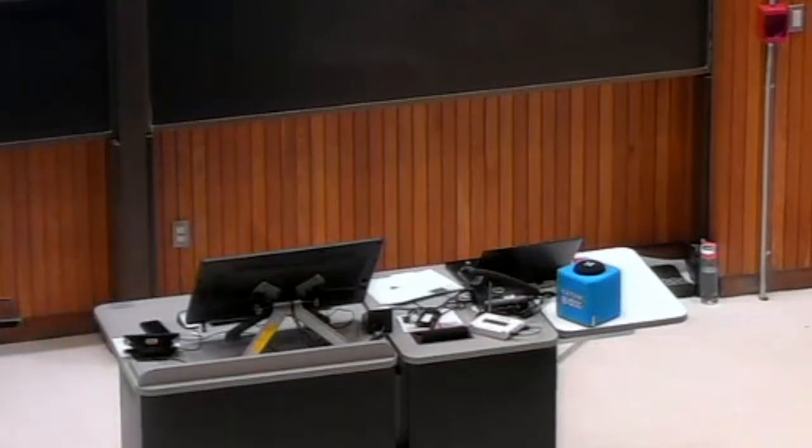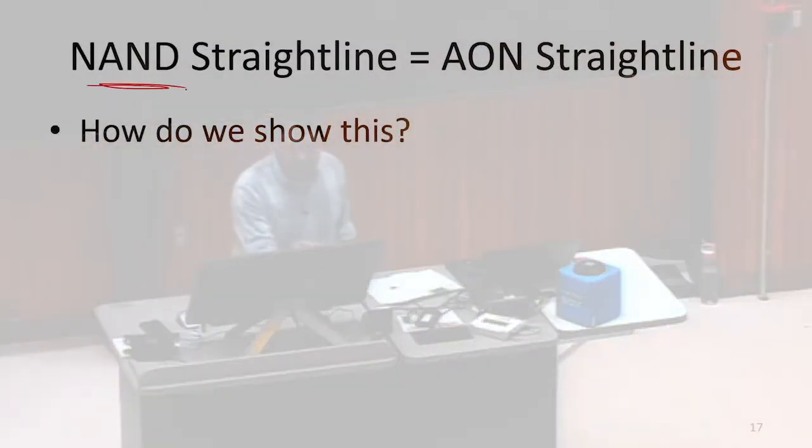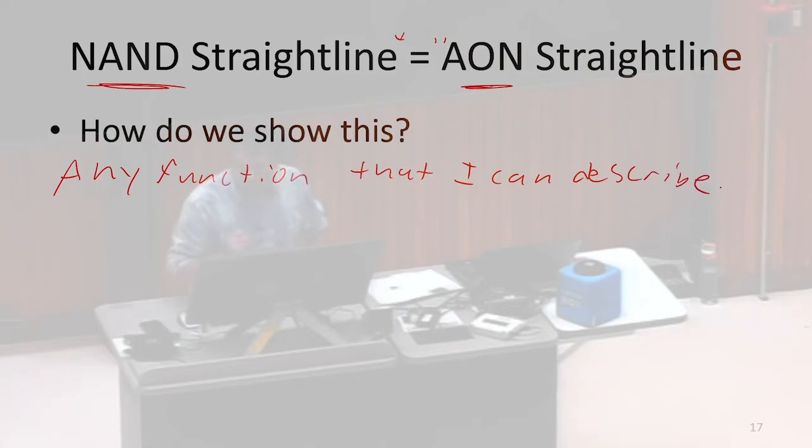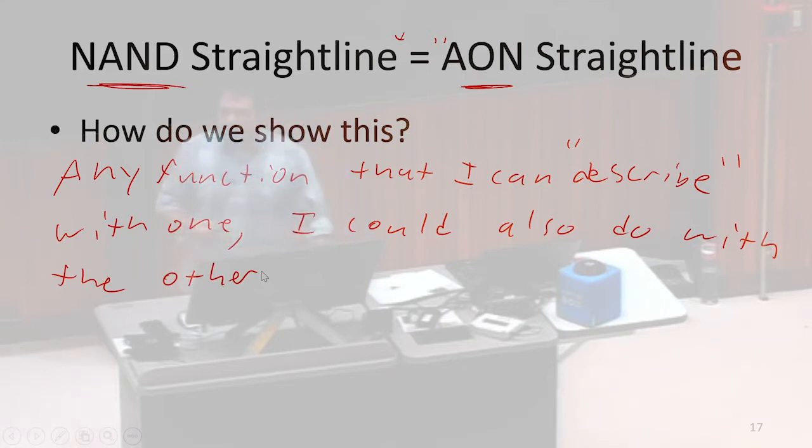If you could express all the first operations using only NANDs. Exactly. We can actually say that NAND straight-line programs are equal in some way. They're in some way equivalent to AND, OR, NOT straight-line programs. And the way that they are equivalent is we can show that any function that I can describe, any function I can write an algorithm for, a process for, or describe. Any function that I can describe with one, I could also do with the other. So when we talk about models of computation being equivalent, one way that we might be talking about that is whether or not we can write the same functions. We can define the same functions with them. In this case, it turns out that using only NANDs, we can do all of the same things we could have done with all of AND, OR, and NOT.